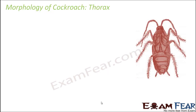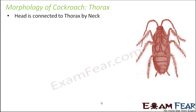Now we will talk about the thorax. There are three main regions: head, thorax, and abdomen. Head is done, so now we will talk about thorax. Head is connected to thorax by the neck, which is very flexible in nature. That is why the head also gets some flexibility, because the thorax itself is quite stiff and forms the framework of the body.